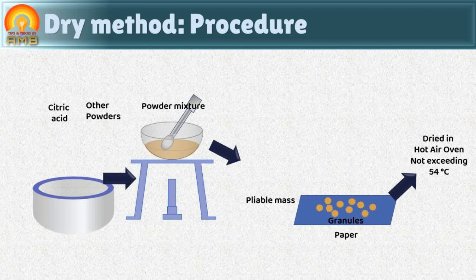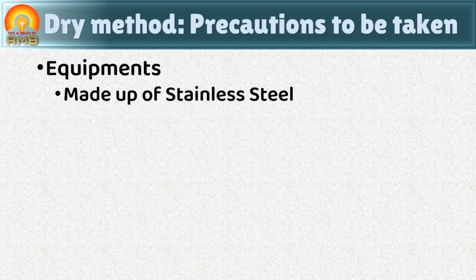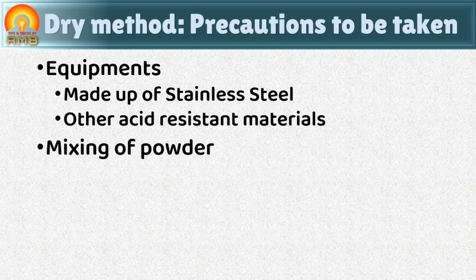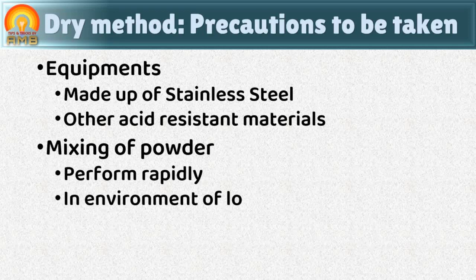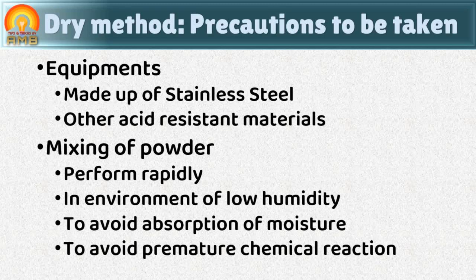While preparing effervescent granules by the dry method, some precautions should be taken. The sieve and mixing equipment should be made of stainless steel or other acid-resistant material, as citric acid and tartaric acid may cause corrosion of various metals. Mixing of powders should be performed as rapidly as possible, preferably in an environment of low humidity, to avoid absorption of moisture and premature chemical reaction. If premature chemical reaction occurs, all the carbon dioxide evaporates during formation and the granules will not produce effervescence.